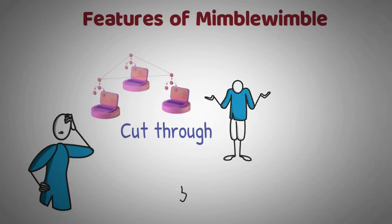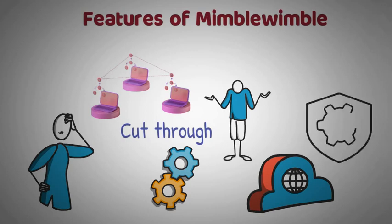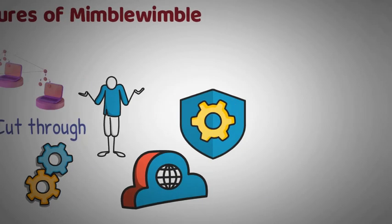As its name might indicate, the cut-through is a function that solves the scalability problem. It allows compressing the blocks, which have large amounts of information. Most of that information can be actually removed without compromising the blockchain's security.